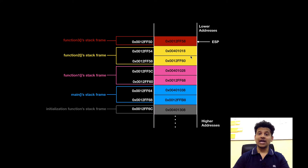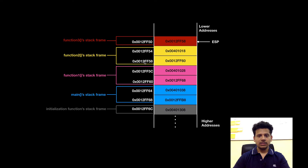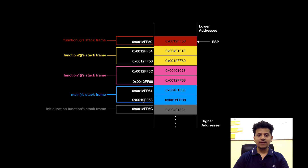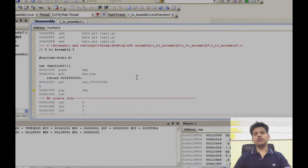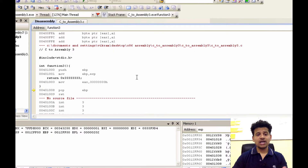Right now, this is how our stack is looking. This is the function 3 stack frame, this is the function 2 stack frame, this is the function 1 stack frame, this is the main stack frame, and this is the initialization function stack frame who called main. We are in Visual Studio and we are executing from function 3.